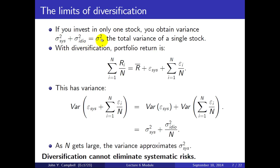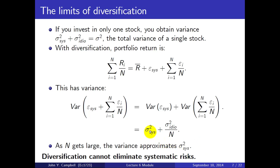With diversification, you take the average of all the R-i's: that's the common mean R-bar plus the systematic shock plus the average of the idiosyncratic shocks. The variance of the portfolio is the variance of the systematic shock plus the variance of the average idiosyncratic shocks — there's no covariance because they don't co-vary. That equals sigma-squared-sys plus sigma-squared-idio divided by n. As n gets large, the variance approximates sigma-squared-sys, the systematic variance, which cannot be eliminated through diversification because it shows up in every stock.